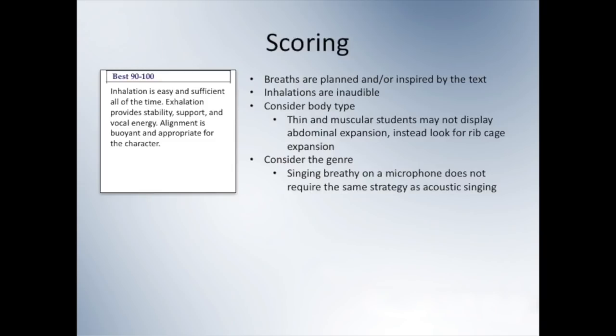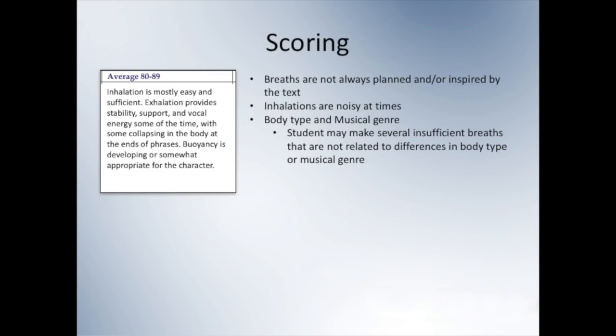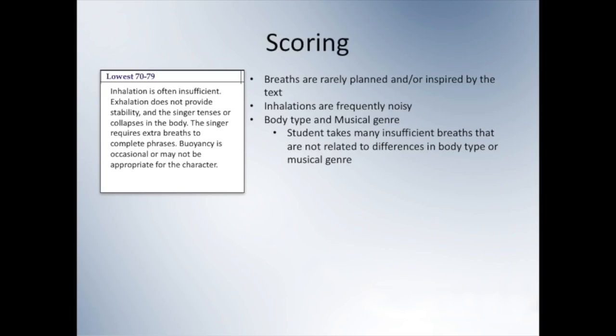Now let's talk about adjudicating breathing and alignment using the NATS musical theater rubric. If a student is to be awarded a score of Best, inhalation should be easy and sufficient all the time; exhalation should provide stability, support and vocal energy; and alignment should be buoyant and appropriate for the character. Inhalation is going to vary among singers depending on their body type — if a student breathes more laterally while another breathes more abdominally, but both are breathing sufficiently and controlling their exhalation, their breathing strategies would be appropriate even though they are different. A rating of Average might be more appropriate if inhalation is mostly easy but exhalation provides stability only some of the time, with some collapsing in the body at the ends of phrases. A student should only receive a rating of Poor if inhalation is often insufficient, exhalation does not provide stability, the singer tenses or collapses in the body, requires extra breaths to complete phrases, and buoyancy is occasional or not appropriate for the character.